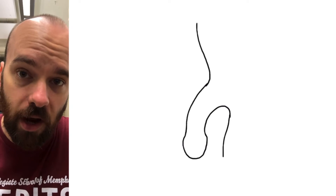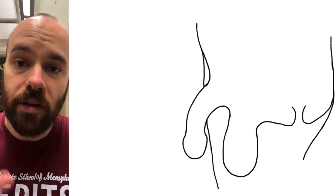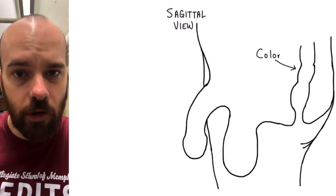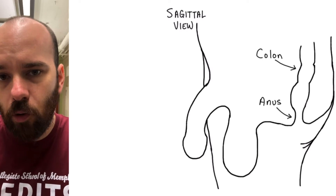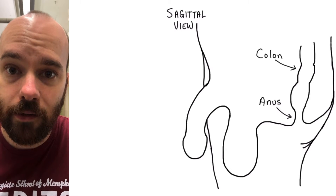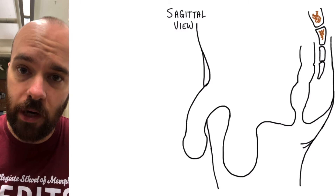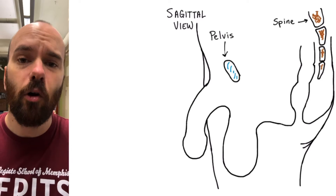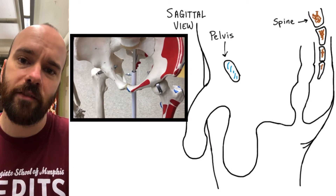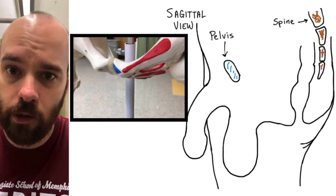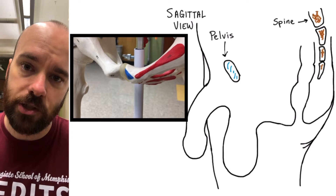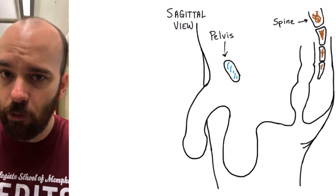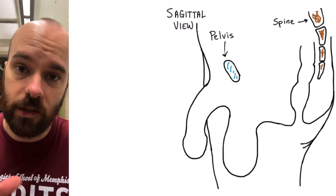Here we have a sagittal cross-section of the pelvic area. We can see a leg back here, we can see the penis, the scrotum, and we can also see the colon and the anus where the colon connects to the outside of the body. Posterior to the colon, we have vertebrae of the spinal cord, and on the anterior side, we have the front of the pelvis — the cartilage between the two halves of the pelvis. The main reason I include these structures in the diagram is to give us a better understanding of where the male reproductive structures are in relation to nearby organs.